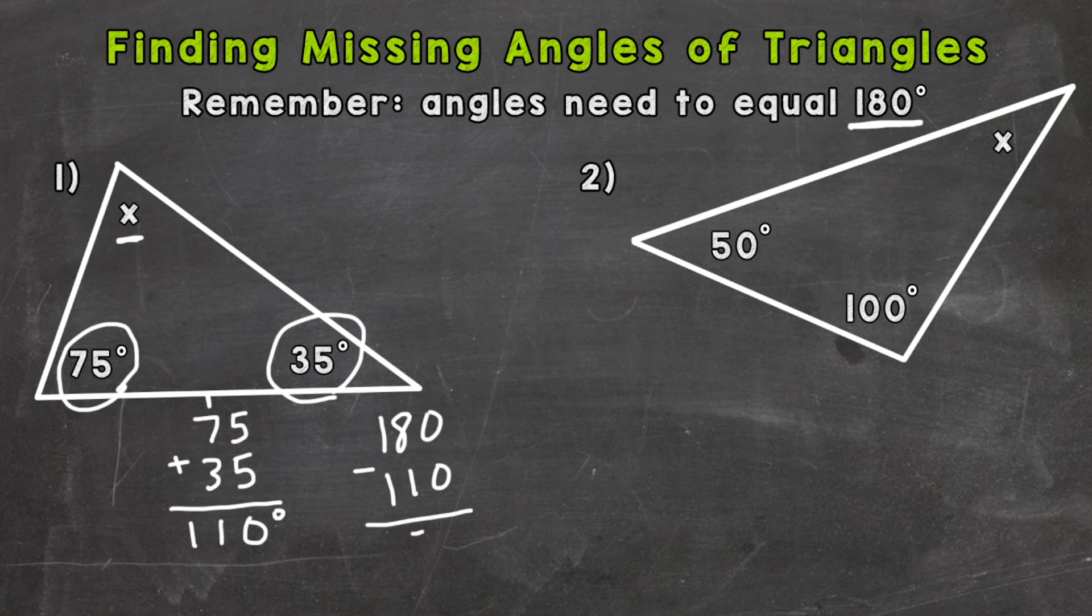And that will give us our missing piece. X is going to equal 70 degrees.